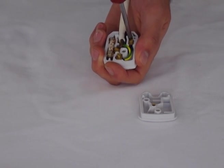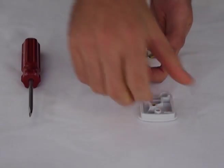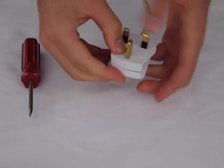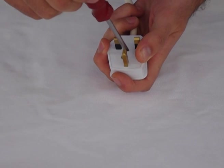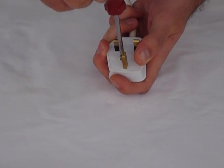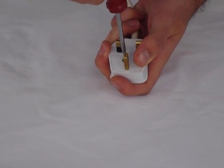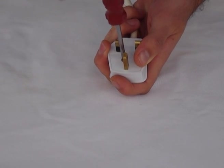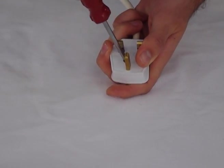And then once each of those are tight simply place the casing back on, turn the plug over and tighten the main casing screw. And from here your plug is more or less finished and ready to use with whatever electrical appliance you want to connect it to.